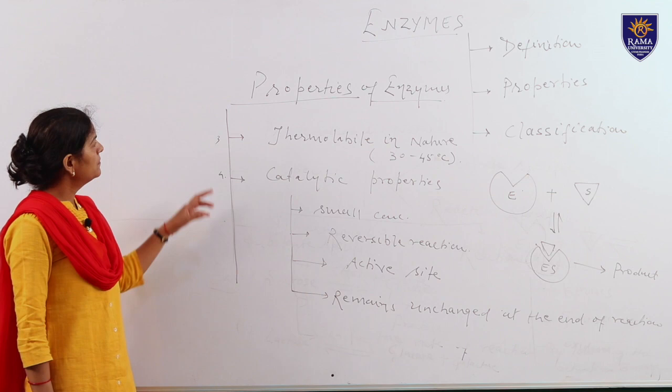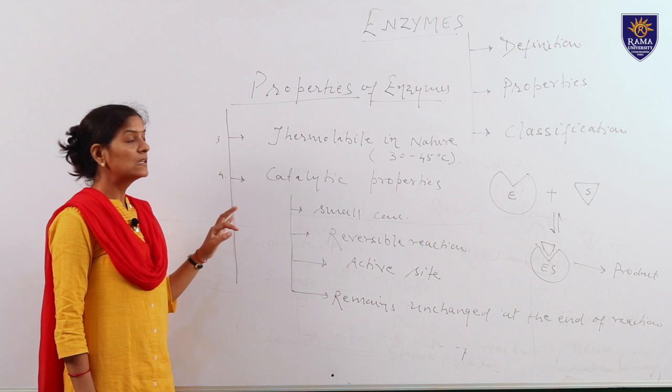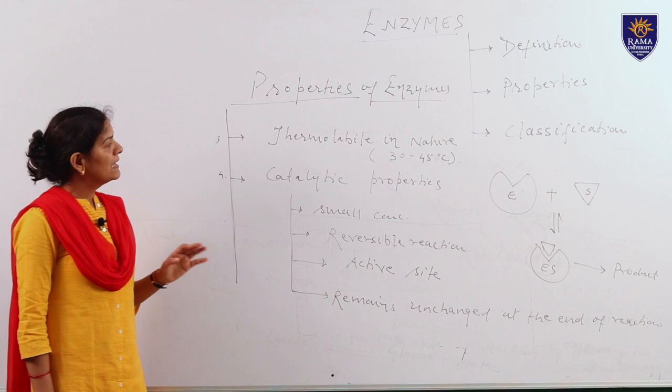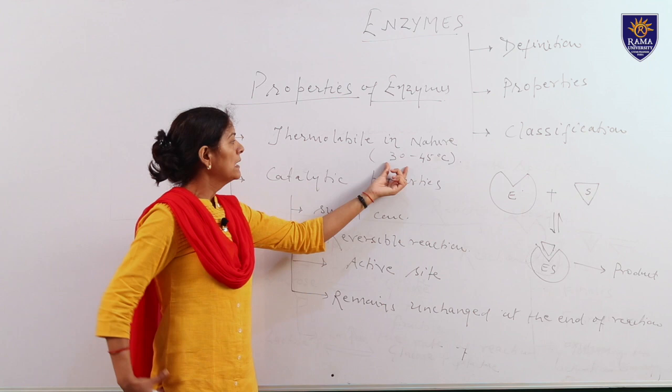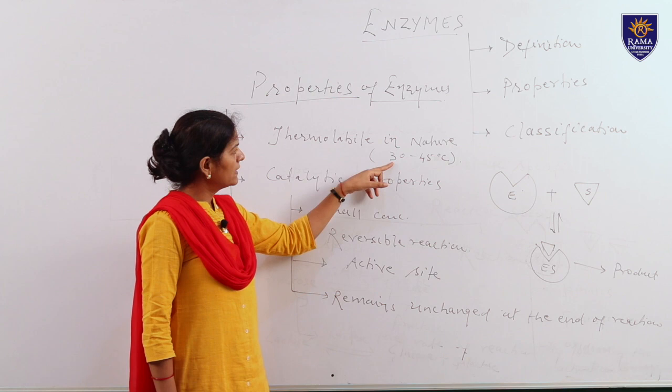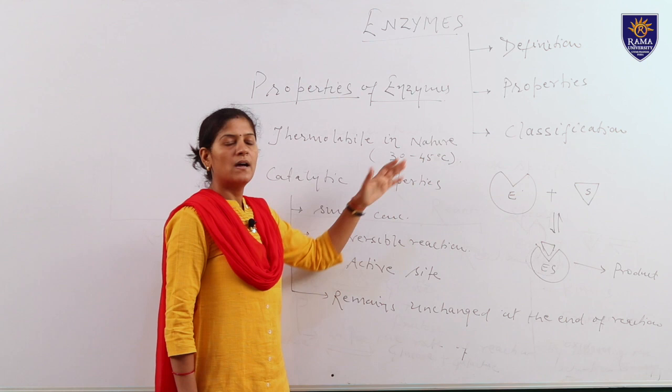The fourth property of enzyme is that all enzymes are thermolabile in nature. Thermo means heat and labile means sensitive, meaning enzymes are heat sensitive. The enzymes are best active at a temperature of 30 to 45 degrees centigrade, and that temperature is called the optimum temperature. Below 30 degrees centigrade the enzyme becomes inactive, while above 45 degrees centigrade the enzymes undergo degradation.